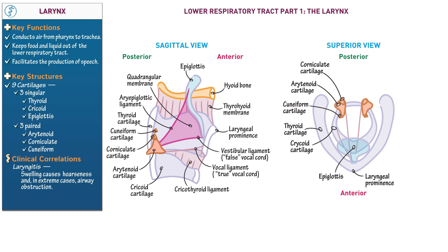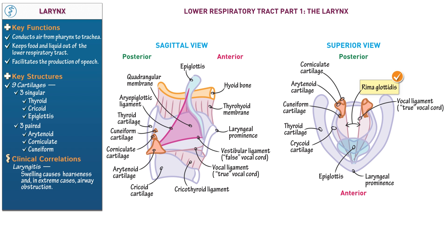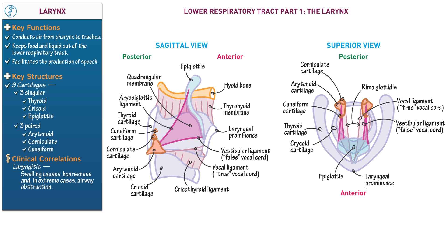Show that the vocal ligaments extend from the cricoid and arytenoid cartilages to the thyroid cartilage. Recall that the vocal ligaments are the free superior edges of the cricothyroid ligaments. Indicate that the opening between the vocal cords is called the rima glottidis. During sound production, laryngeal muscles contract to rotate the arytenoid cartilages and alter the opening between the true vocal cords. Finally, show that the vestibular ligaments extend from the arytenoid cartilages to the lateral edges of the epiglottis — notice that they're lateral to the true vocal cords. Recall that the vestibular ligaments, the false vocal cords, are the inferior free edges of the quadrangular membrane. This concludes our diagram.